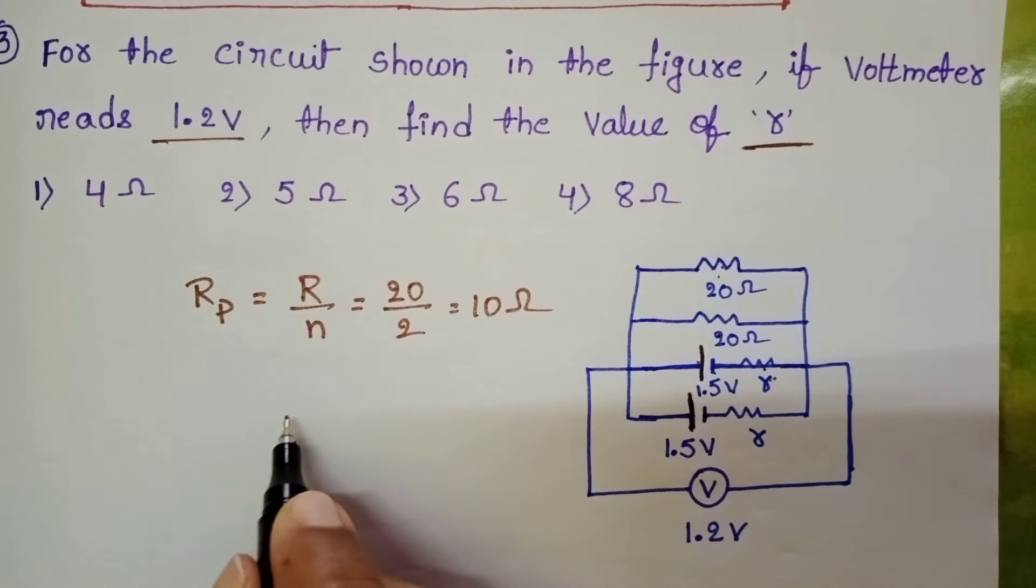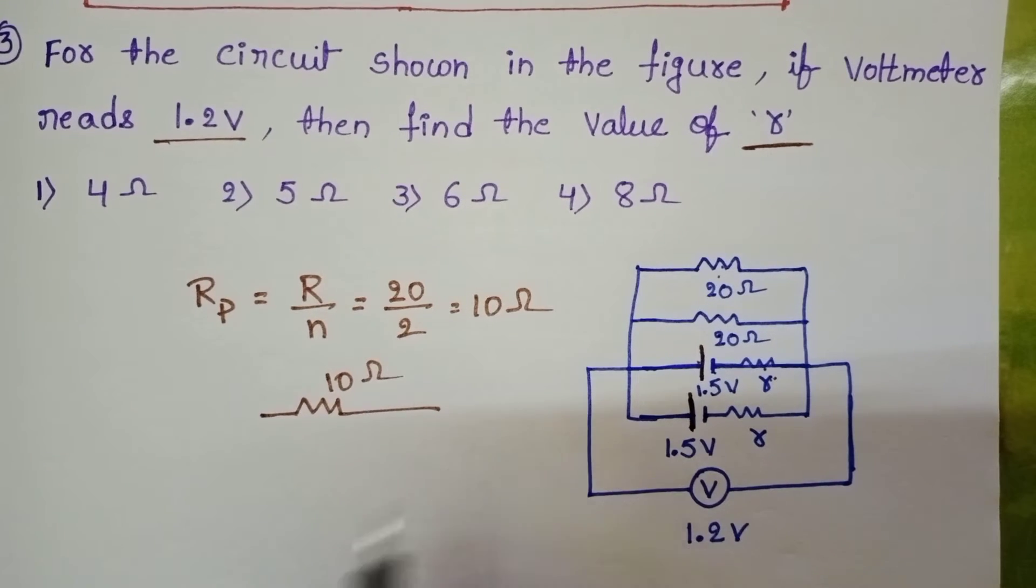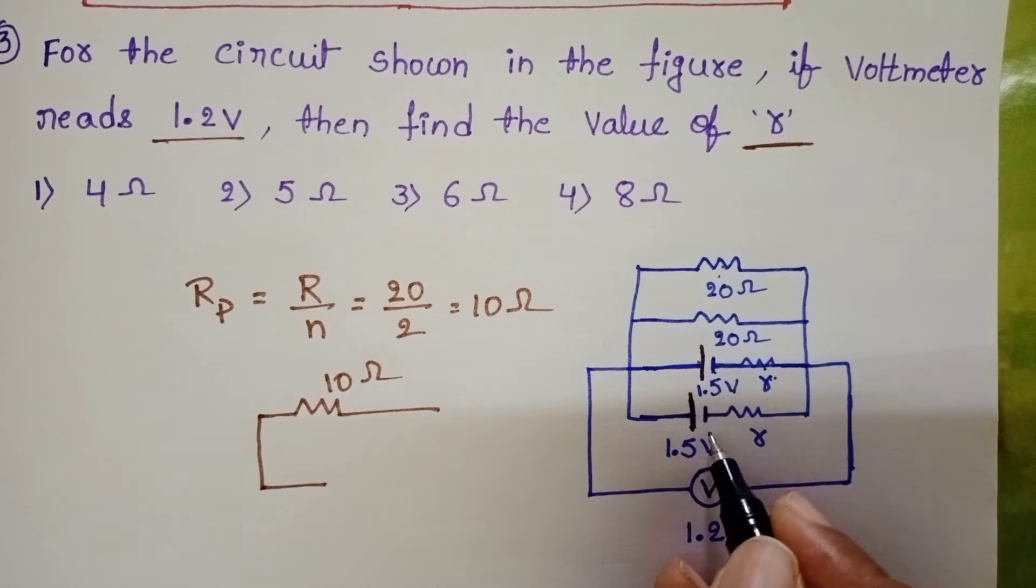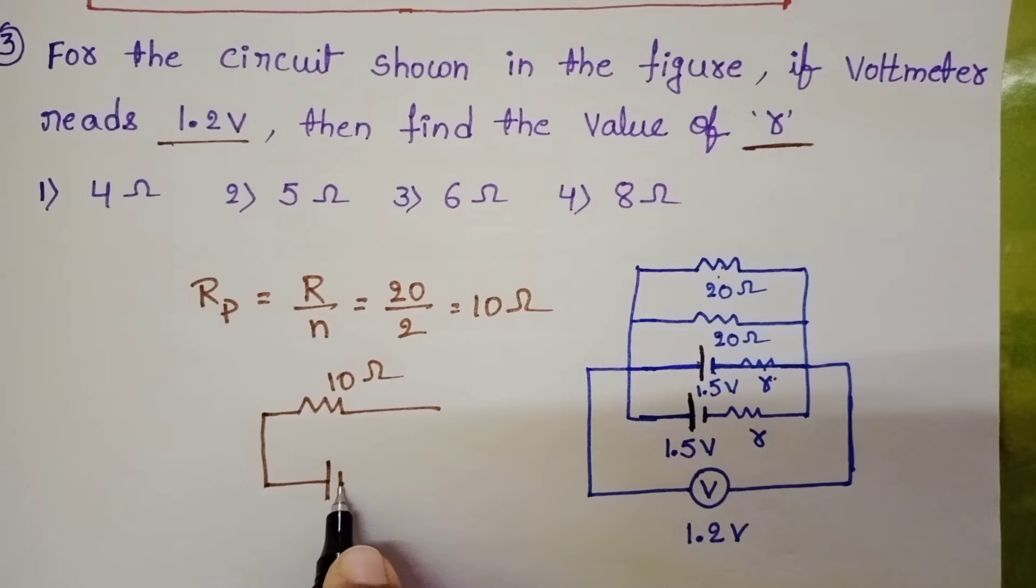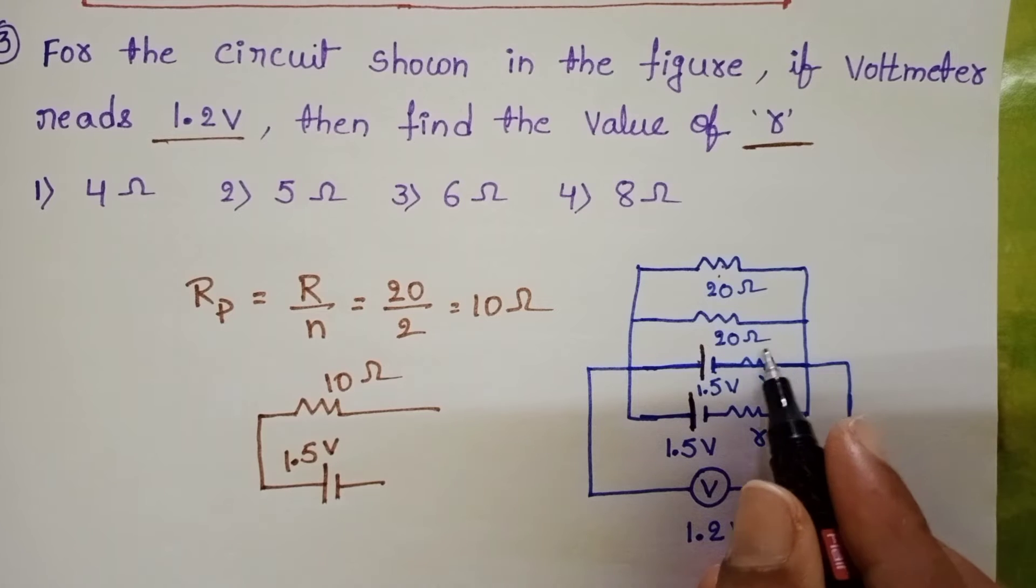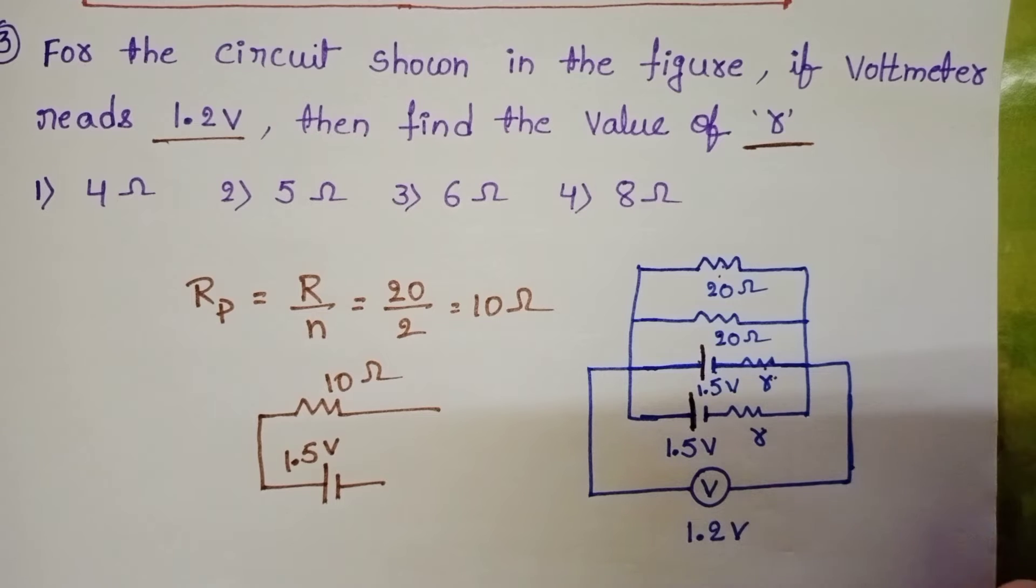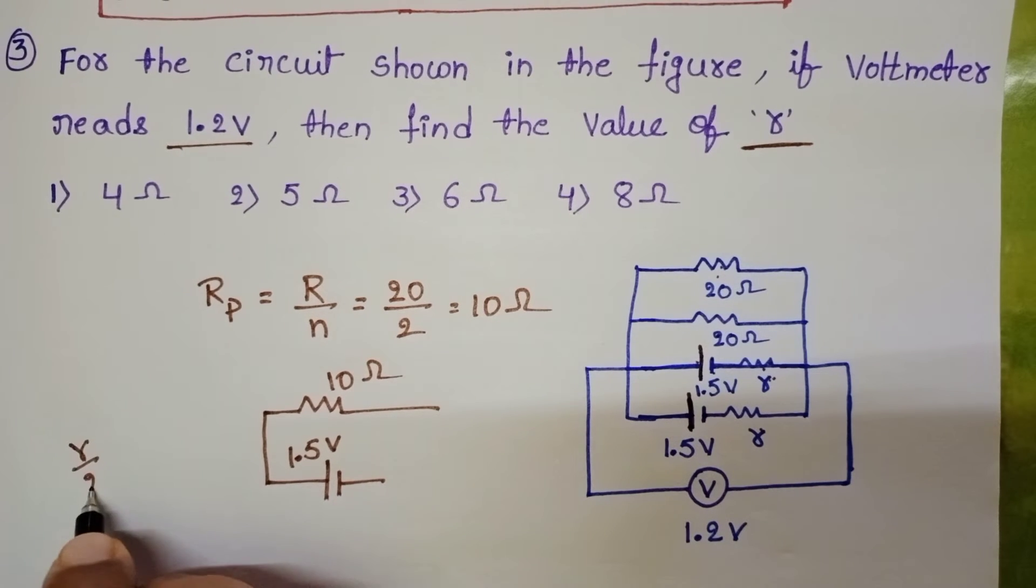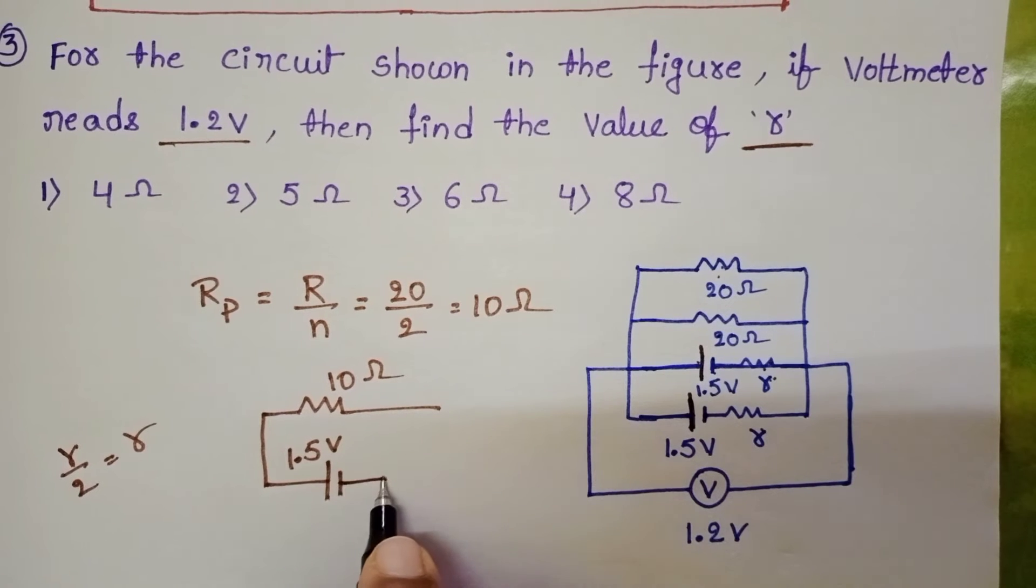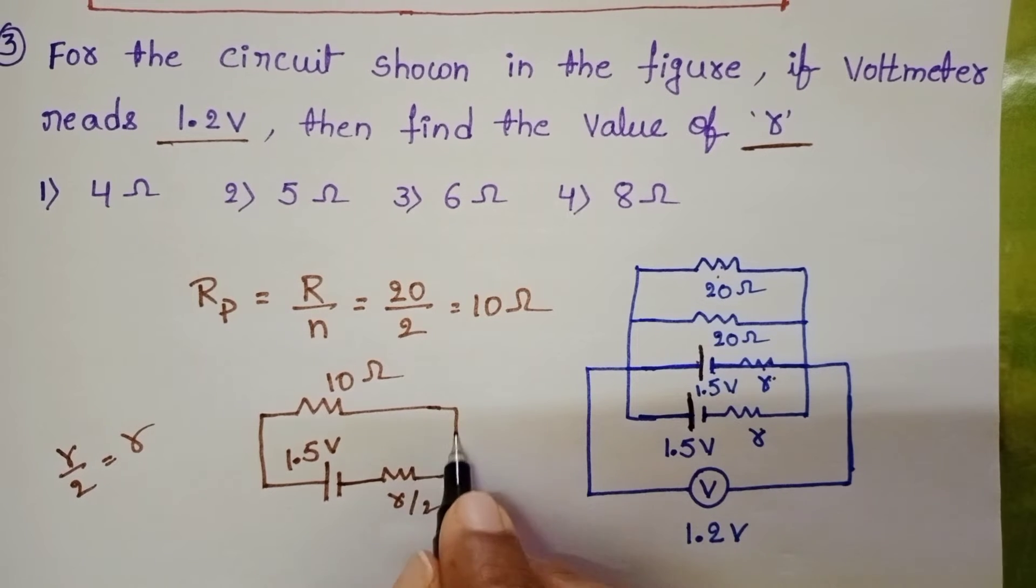Now the circuit diagram becomes 10 ohm. And now these two are connected in parallel. Then it becomes 1.5 volt only. And the equivalent resistance of internal resistance R by N, that is equals to R by 2 because connected in parallel. Now this internal resistance in series with the cell, so here R by 2.